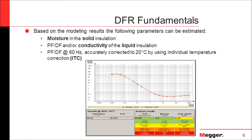Here is a typical screen of the software showing the dielectric response: the x-axis shows frequency, and the y-axis shows the power factor or dissipation factor value. At the bottom you will see the results — the measured capacitance, the measured power factor or dissipation factor, the corrected values to 20 degrees C, the moisture percentage, and the conductivity of the oil. Ultimately, we are looking at how moisture affects the service life of our transformer.